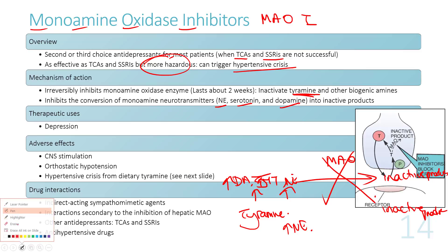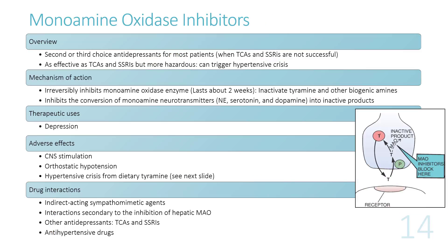Neurotransmitters released into the synapse are reuptaken into the releasing neuron and then either inactivated by monoamine oxidase or, if MAOIs are present, repackaged into vesicles for re-release, increasing neurotransmitter levels in the synaptic cleft. MAOIs irreversibly inhibit the monoamine oxidase enzyme, and effects last about two weeks until new enzyme is synthesized.